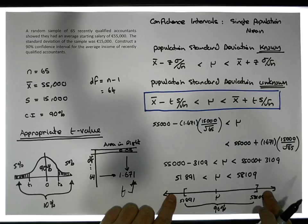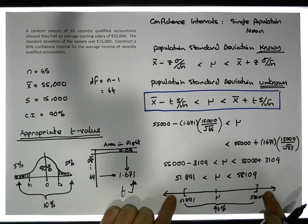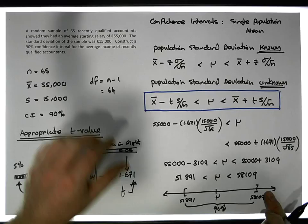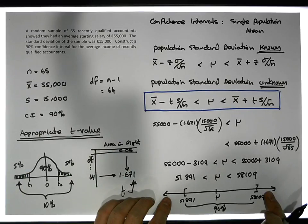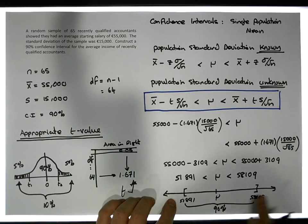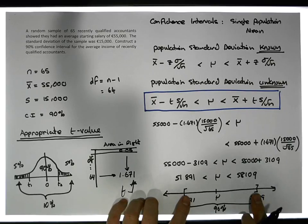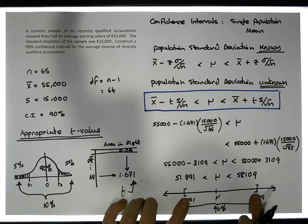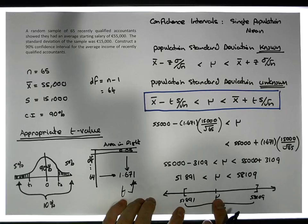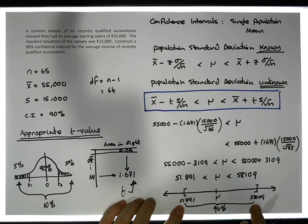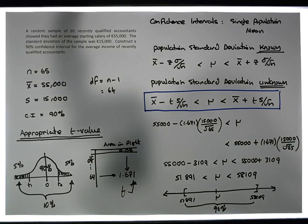It could actually be outside of that interval, but it should only occur outside that interval 10% of the time. The population mean could be out there, but through this particular theory, we're 90% confident that the population mean is bounded below by 51,891 and above by 58,109.